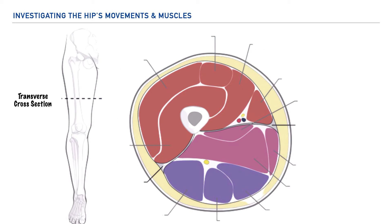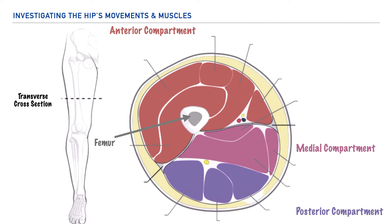Now that we've gotten a review of the movements taking place at the hip, let's take a moment to talk about the muscle compartments of the thigh. Let's first highlight the location of the femur, which is right here. If we were to create a transverse cross section of the thigh musculature, we'd see muscles neatly organized into compartments — specifically three compartments: the anterior, medial, and posterior compartments.